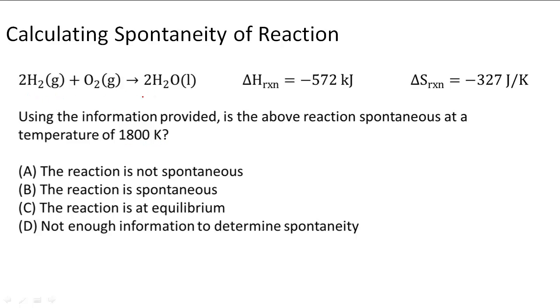So using this equation we have to figure out if it's going to be spontaneous, so we're going to use the Gibbs free energy equation. And since we're working in kilojoules, we're going to convert this to kilojoules. So it's going to become negative 0.327 kilojoules per Kelvin for the change in entropy.